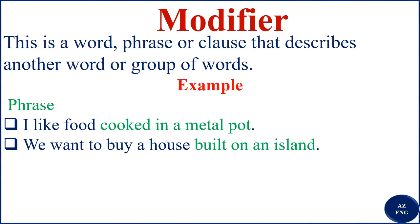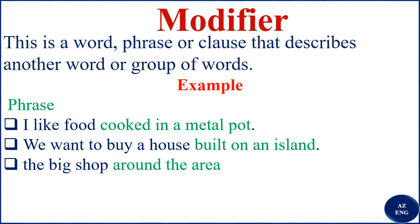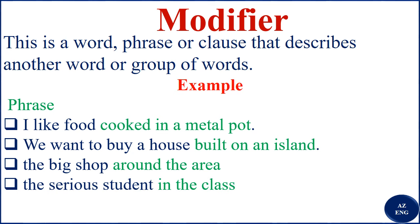'We want to buy a house built on an island' — 'built on an island' modifies and describes the house. 'The big shop around the area' — 'around the area' is a phrase; it modifies 'shop.' 'The serious students in the class' — 'in the class' modifies 'students.' 'A good boy in the community' — 'in the community' is a phrase that modifies 'boy.'